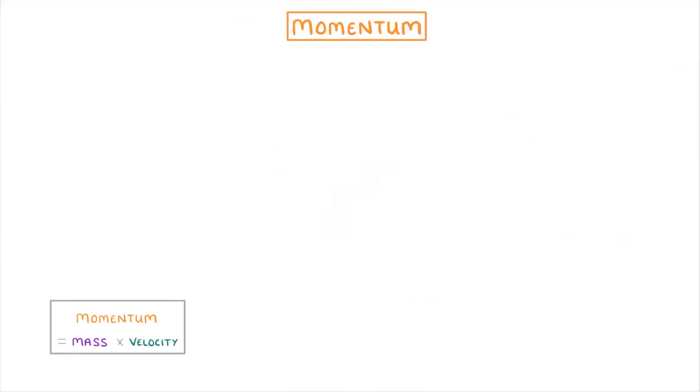The one thing we haven't mentioned yet, is that you need to know that the letter symbol for momentum is rho, which looks like a P. So the momentum equation can also be written as P equals MV.